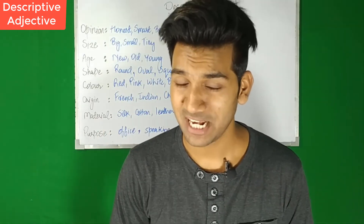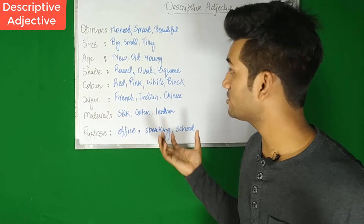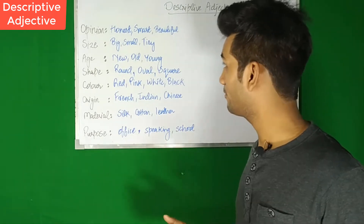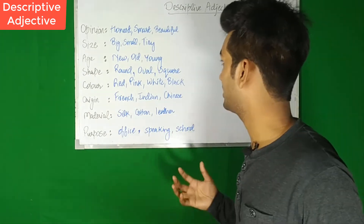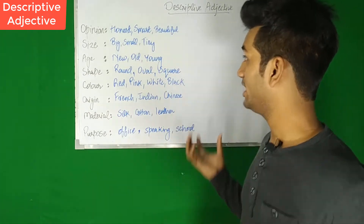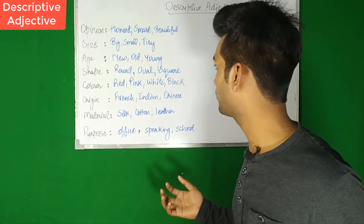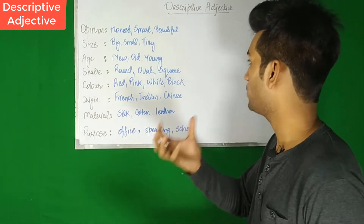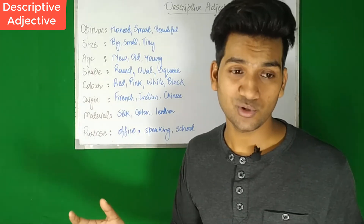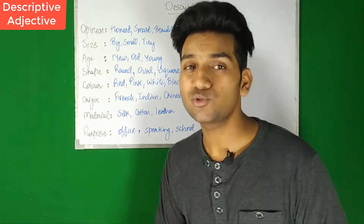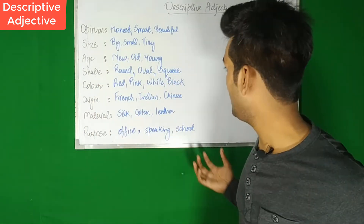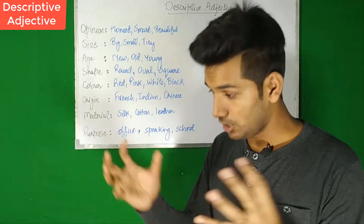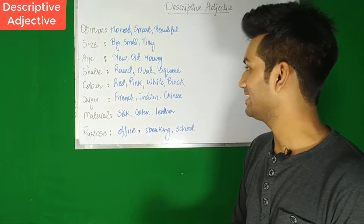The question is: how do we describe a noun or a pronoun? We describe using opinions or qualities - like honest, smart, beautiful, good looking, hard working. We also use size: big, small, tiny - 'It's a big house,' 'It's a small room.' We use age: new, old, young - 'It's a new concept,' 'He's an old person.' We use shape: round, oval, square - 'It's a round table.' We use colors: red, pink, white, black, and all the colors we have.